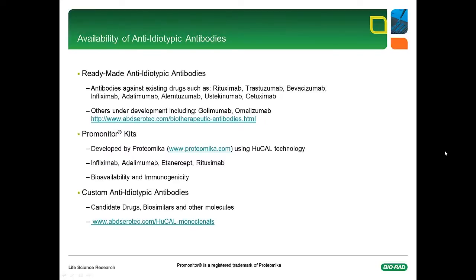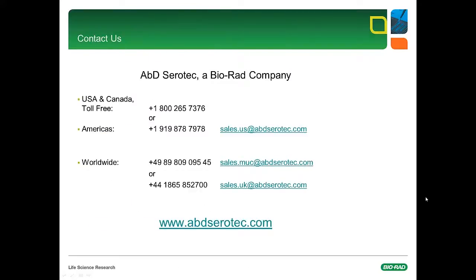There are several ways to access anti-idiotypic antibodies selected from HuCAL. First, ABD-Serrotec has developed a range of ready-made anti-idiotypic antibodies against marketed antibody drugs, which are available through our online catalog. Several have already been launched, and more will come in the near future. Second, ABD-Serrotec has collaborated with the company Proteomica to develop ready-to-use kits for patient monitoring and immunogenicity testing. The current portfolio comprises kits for Infliximab, Humira, Enbrel, and Rituximab. Please visit the Proteomica website for more information. Third, ABD-Serrotec offers custom antibody generation. The fully human anti-idiotypic antibodies generated using the HuCAL technology are a highly specific and sensitive tool that enable the development of PK and immunogenicity assays for effective pre-clinical research and clinical monitoring. Contact us to discuss how we can make an antibody specific to your drug, biosimilar, or other molecule of interest.